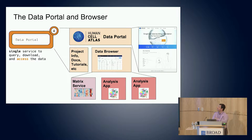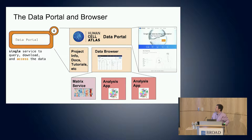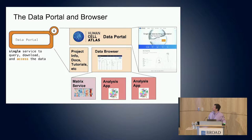The data browser and data portal are websites designed to allow researchers to do queries and find and access HCA data. The data portal is really divided into two parts. The first part has a lot of project information, documentation, tutorials, user guides, and the data browser is actually our faceted data search tool that allows researchers to quickly filter and search for the data that they're interested in.